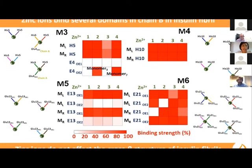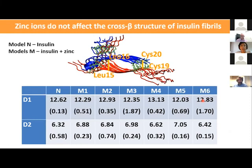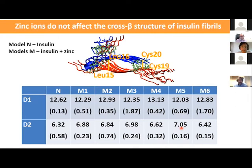We also measured two inter-sheet distances along the insulin fibrils and found little difference across models. This indicates that zinc ions do not affect the coarse cross-beta structure of insulin fibrils.